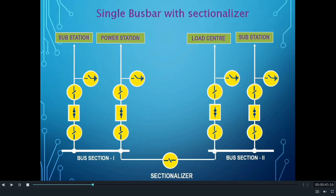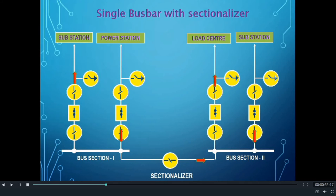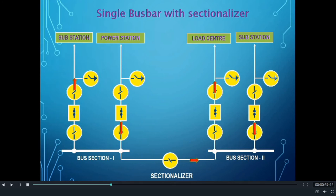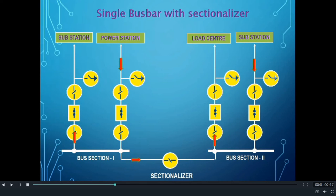Let us see how this Busbar Scheme works when the Sectionalizer is an Isolator only. In normal condition, there will be power flow through all the feeders, as shown in this picture. The power flows through the Sectionalizer from Bus Section 1 to Bus Section 2.